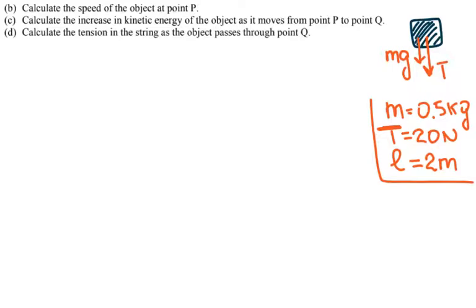So for part B they ask you to calculate the speed of the object at point P. Because it is circular motion there is centripetal acceleration and the net force is equal to ma_c. Your net force is your centripetal force. So in this case your net force is negative T.